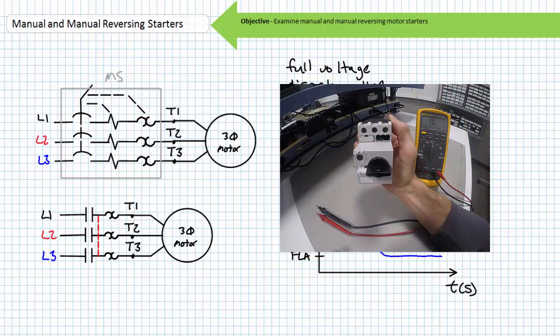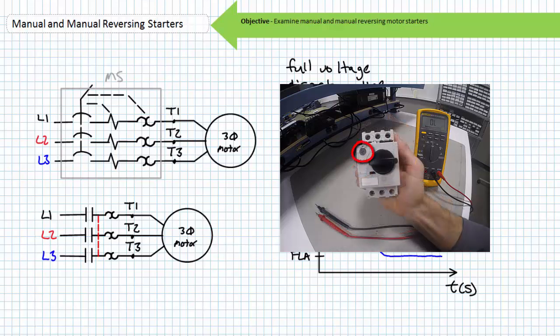Manual motor starters often feature a lockout and tagout mechanism on the front dial. An operator wishing to service the motor can open the contacts, pull out a locking slider and insert their individual lock and tag. Additionally, motor starters often feature an adjustable current setting for the overload. This allows a motor starter to be employed for a range of applications.